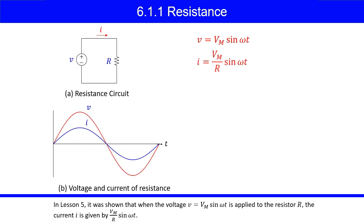In Lesson 5, it was shown that when the voltage V equals Vm sine omega T is applied to the resistor R, the current I is given by Vm over R sine omega T.